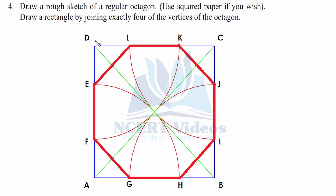Connect the diagonals of the square to find the center intersection point. Then take a compass, measure the radius from one vertex to the center point, and draw an arc from every side meeting at that center point — this gives the third arc.